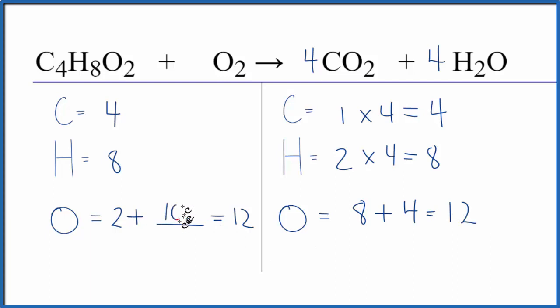So two plus ten, that gives us twelve. So we can put a five here. Two times five, that gives us the ten. And then we have the two oxygens here. Two plus ten is twelve. We're done.